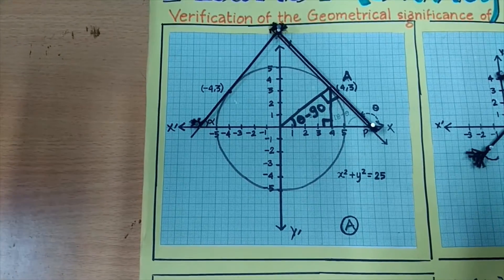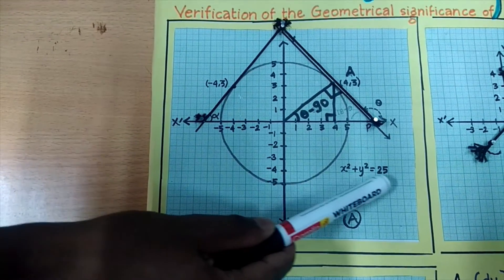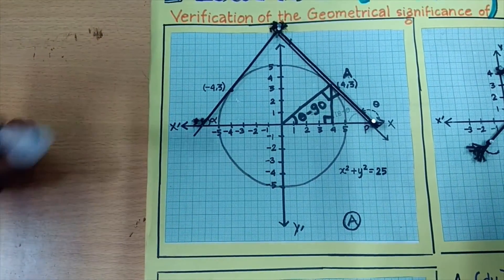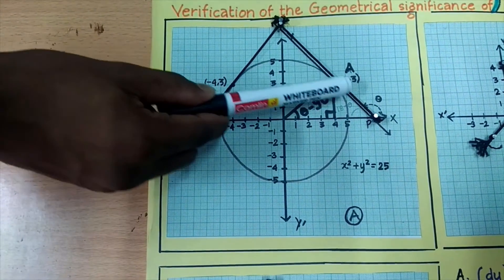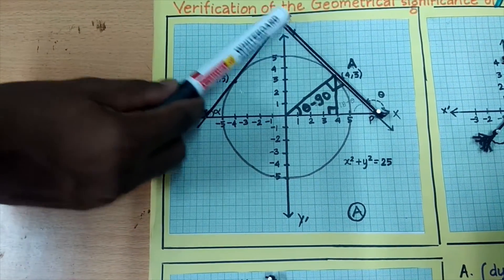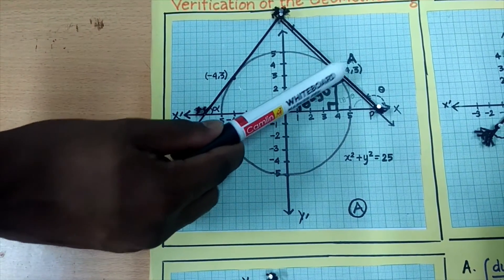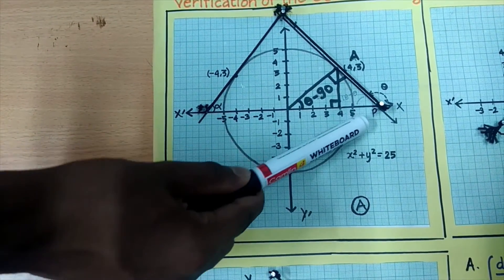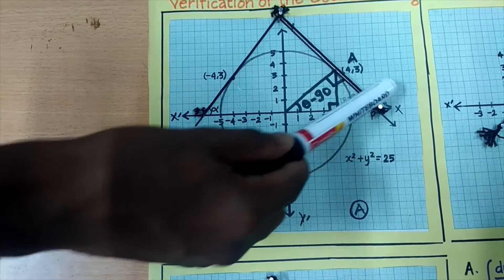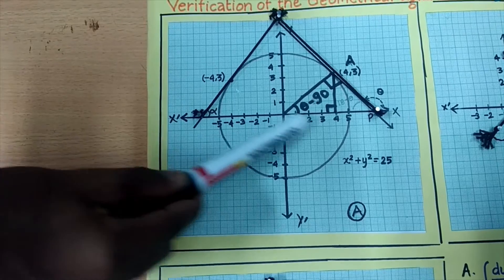In Sheet A, the graph of the circle x² + y² = 25 has been drawn. We take a point A on the circle. We will draw a tangent through the point which will intersect the x-axis at point P, making angle θ with it. The center of the circle is (0,0) and the radius is 5.